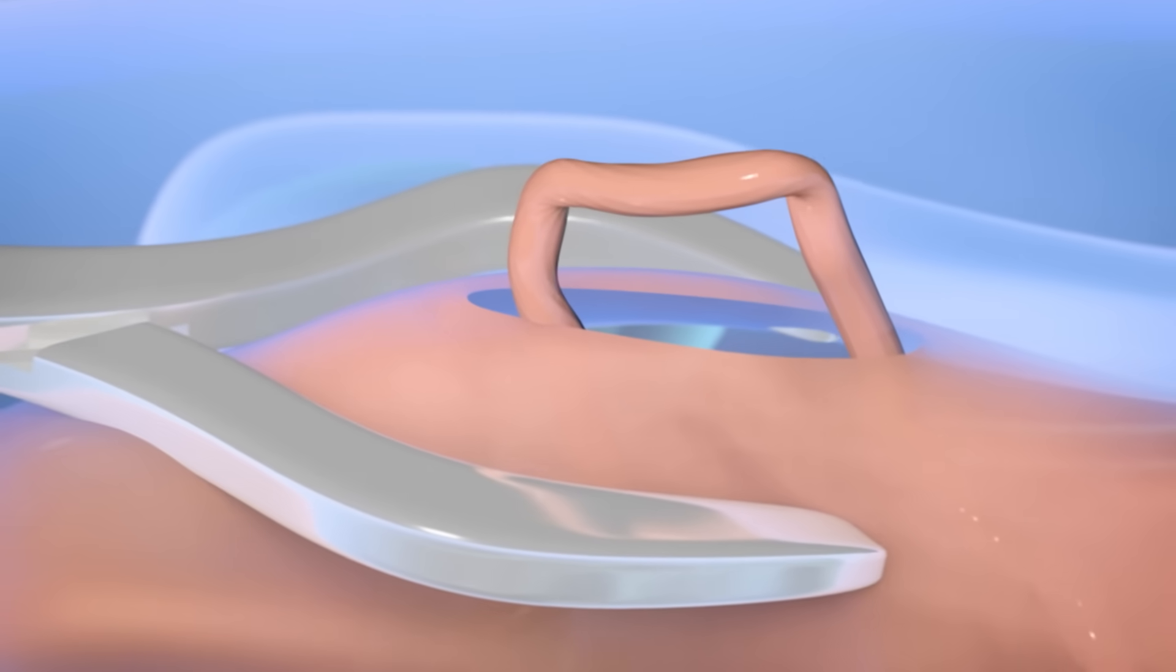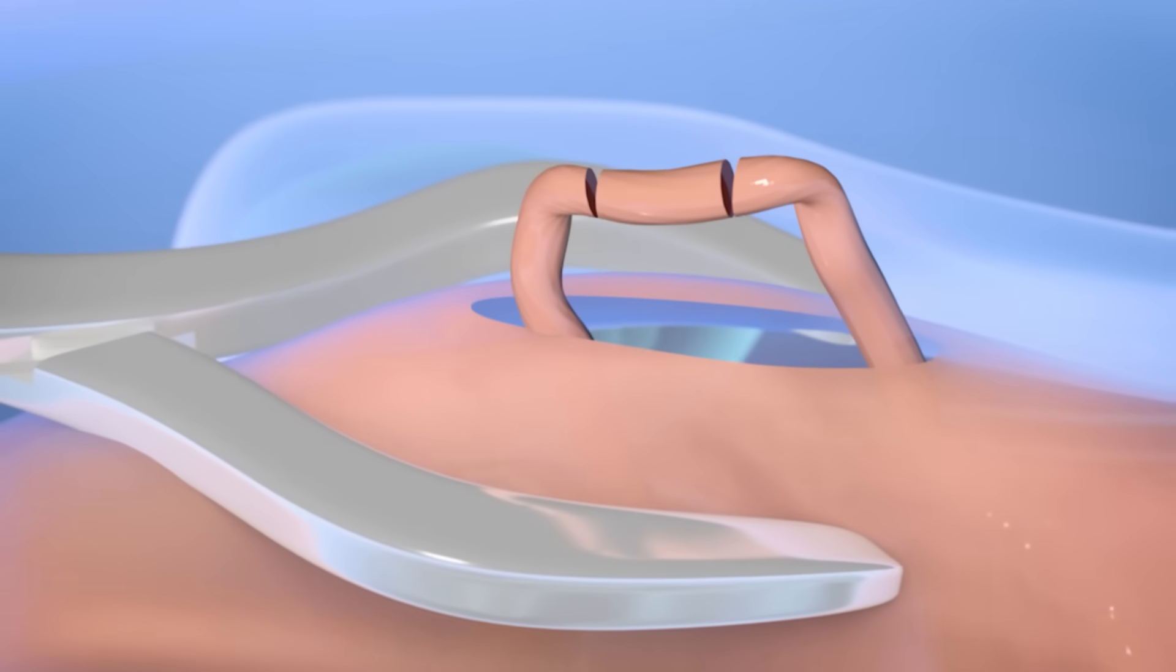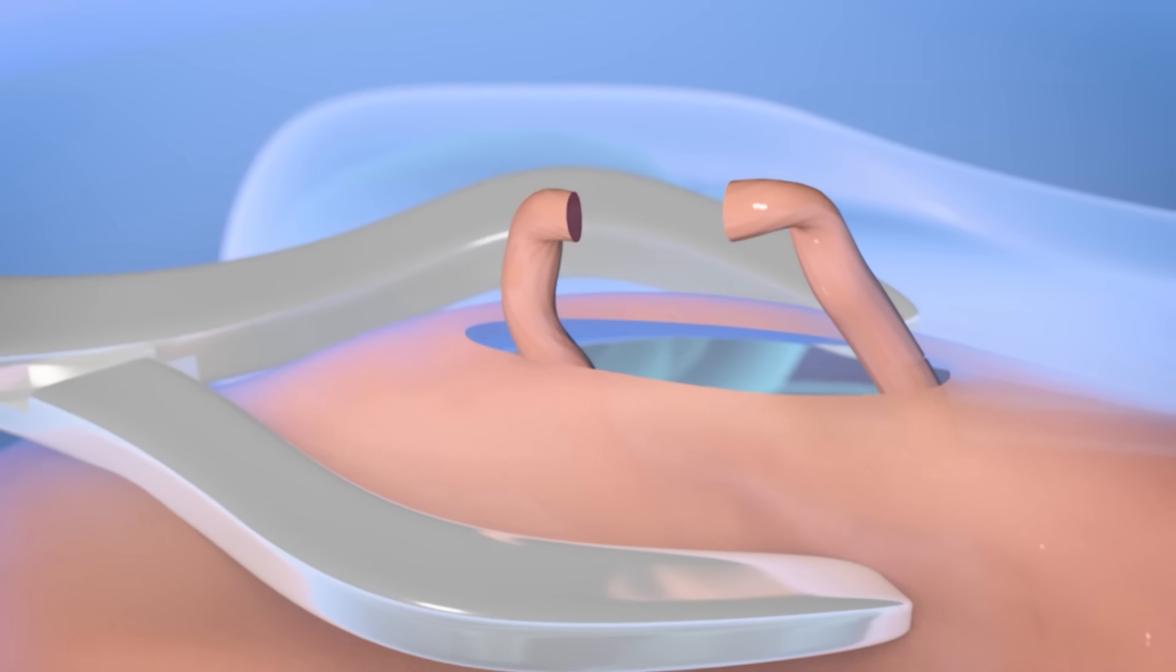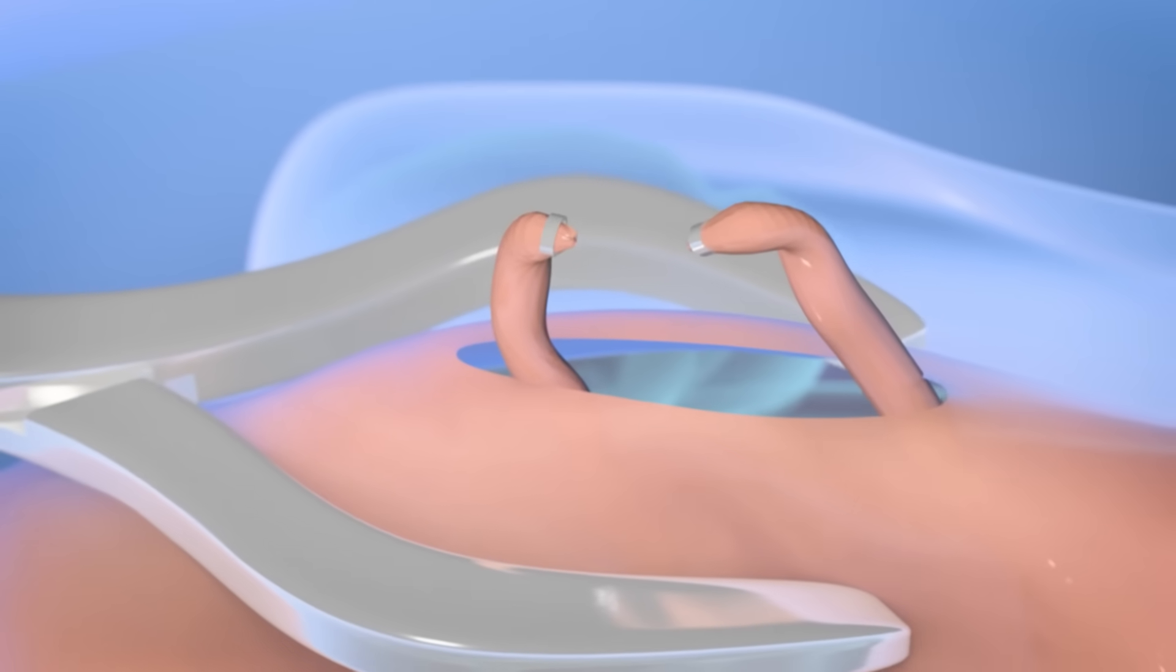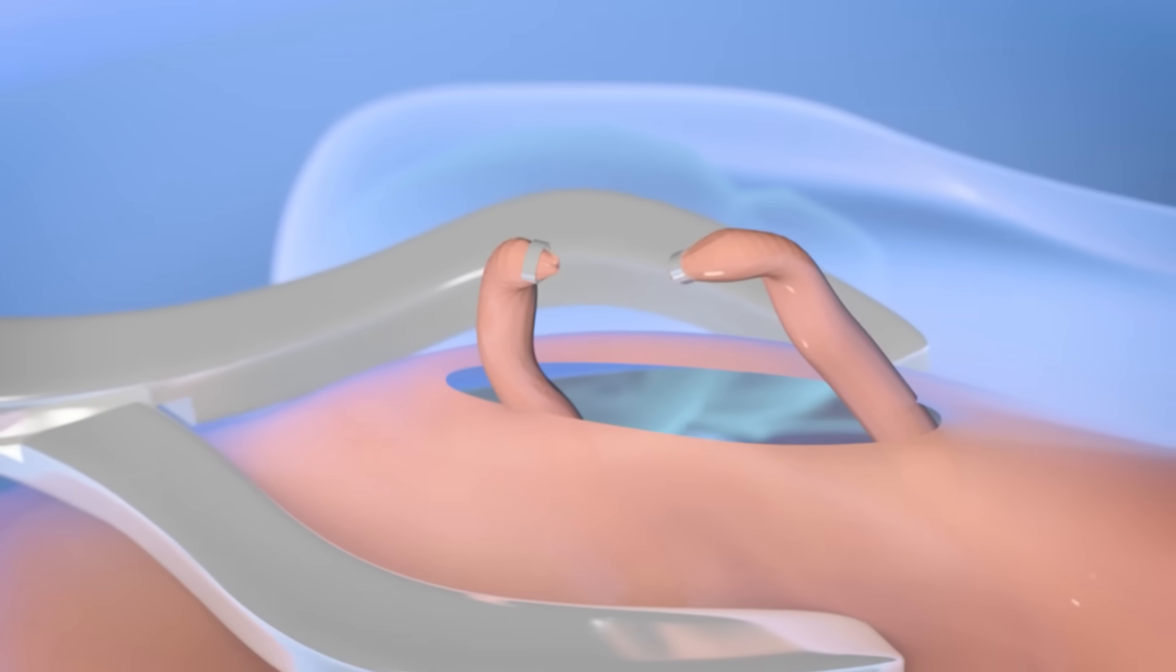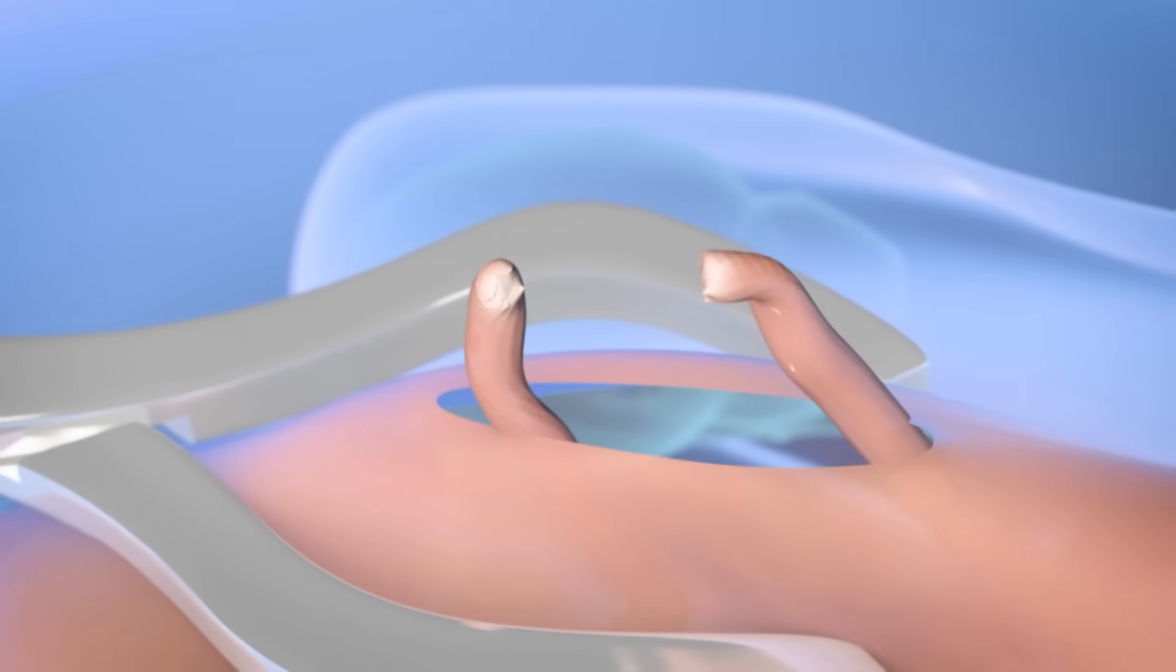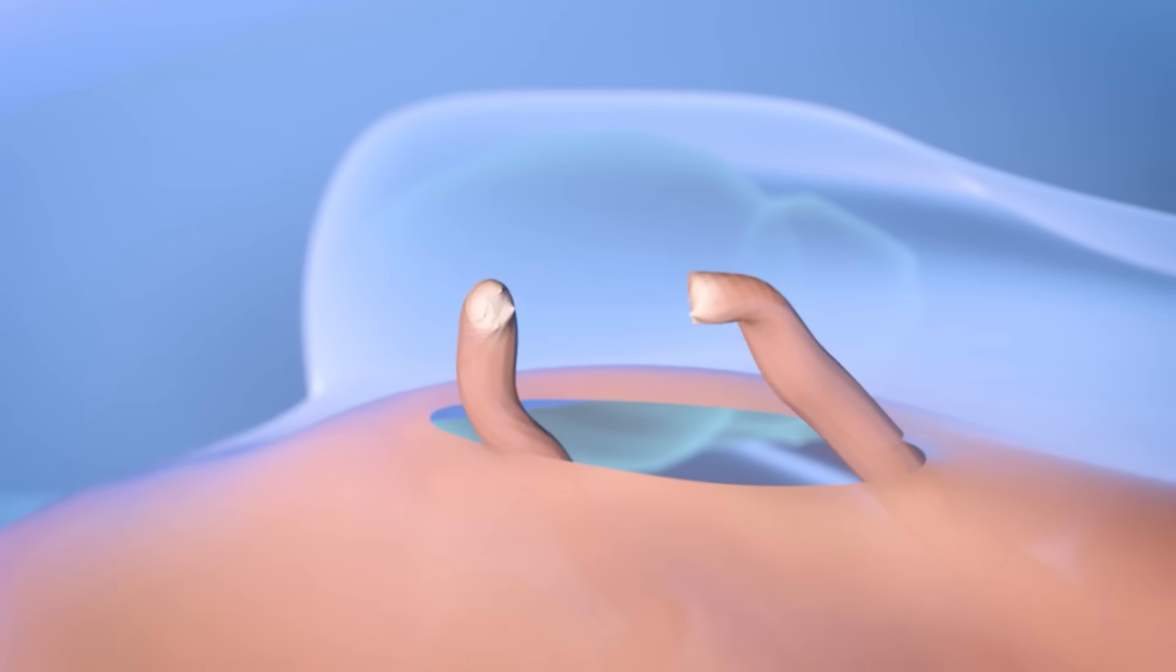The vas deferens will be cut and a small part will be removed. Later the ends of the vas deferens will be tied, sealed or ligated with surgical clips, and once this is done the vas deferens will be placed back in the scrotum.